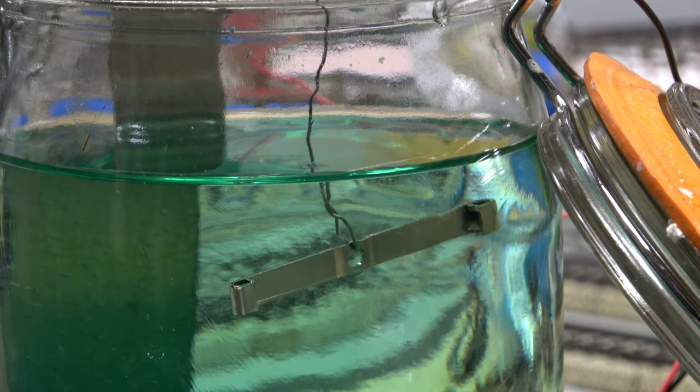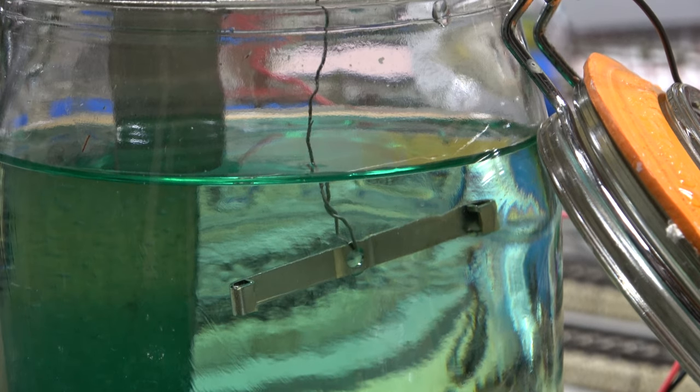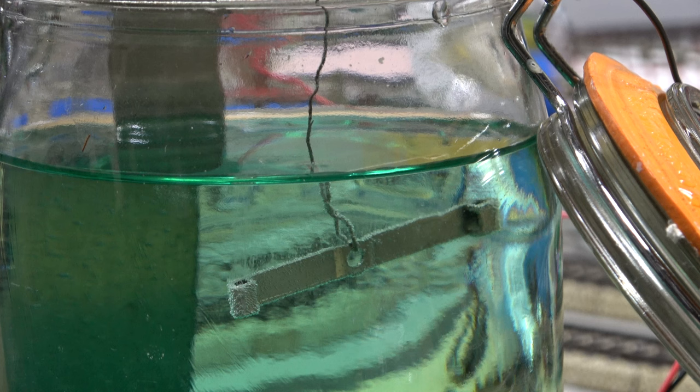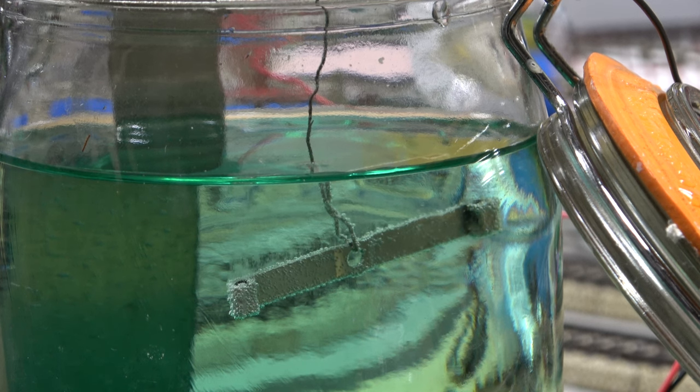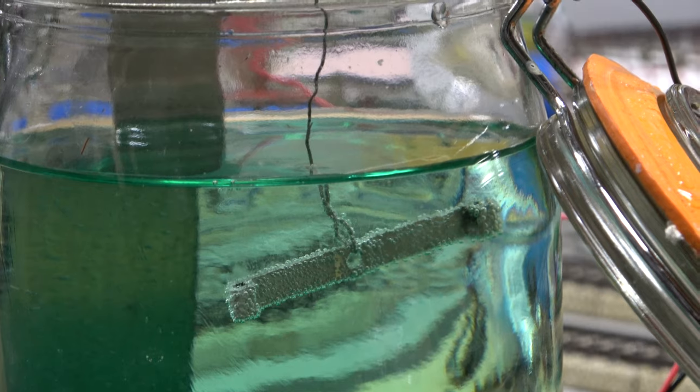All we have to do now is plug the charger in, and if the polarity is correct, we should now see some bubbles building up around the slider. That's it. We are electroplating.